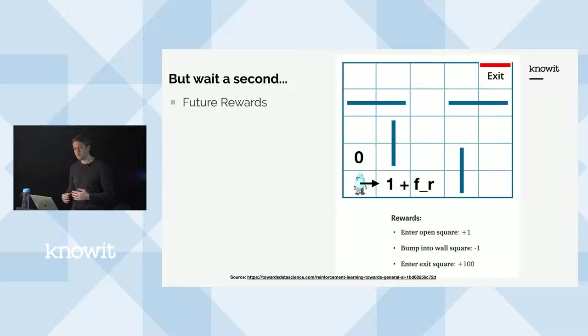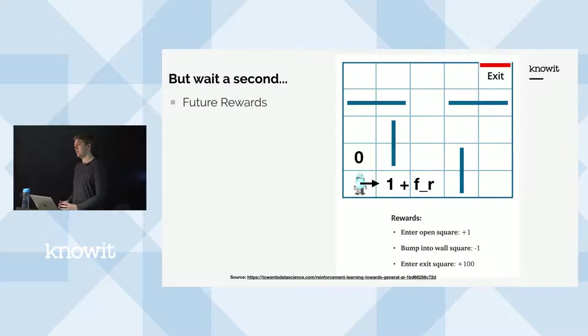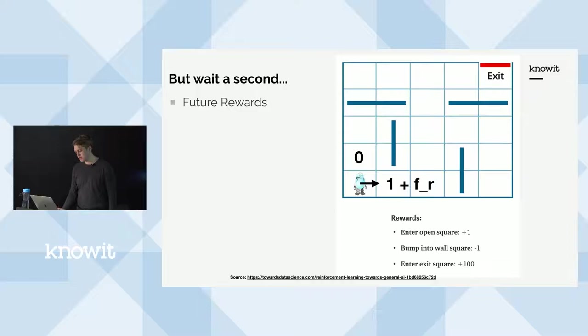Another problem is future rewards. Let's say you're playing an RTS game and you build a building that costs a lot up front but generates more money over time. Fifteen minutes later you win because you have so much more gold than your opponent. The agent might think it was what happened right before winning that made it win, but in reality it was the decision at the very beginning of the game. This is also something you have to address in reinforcement learning.